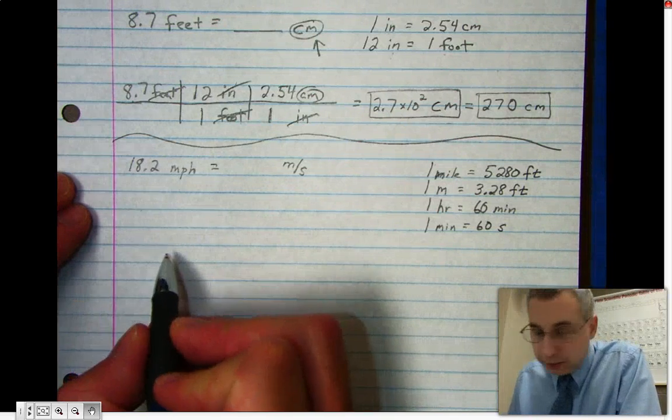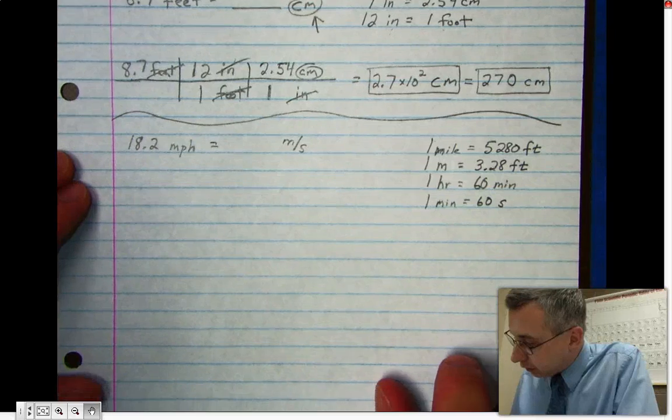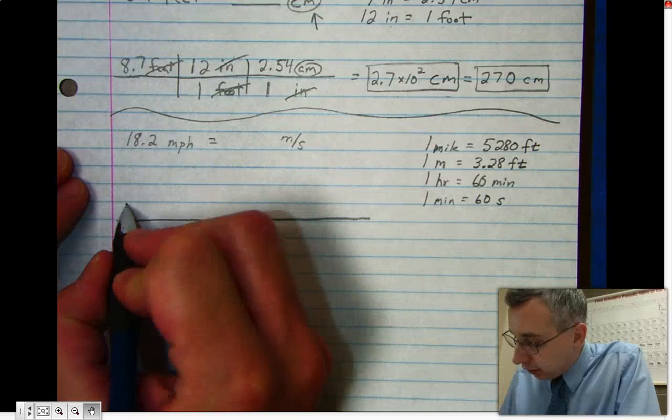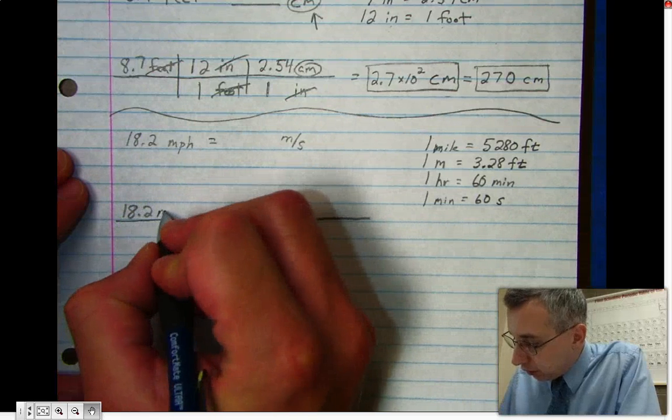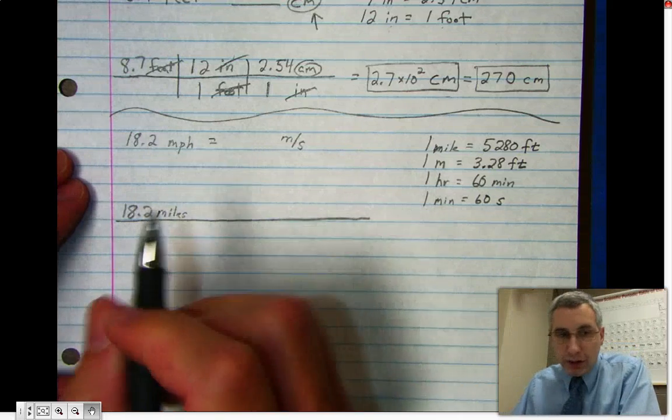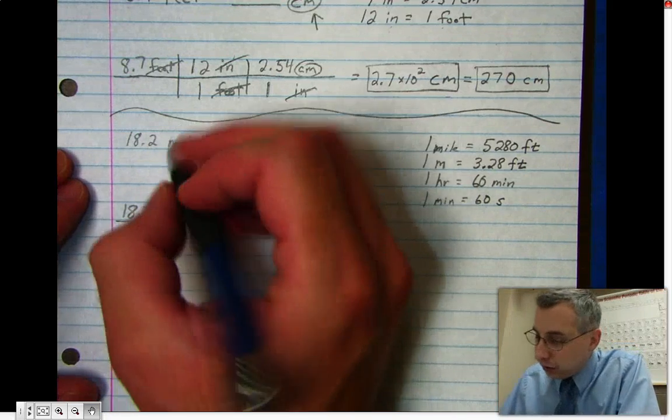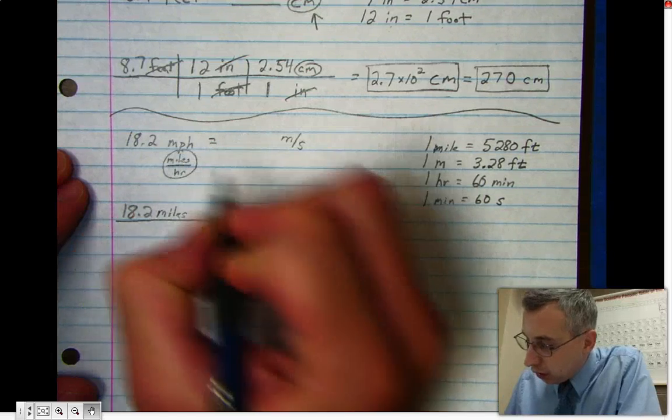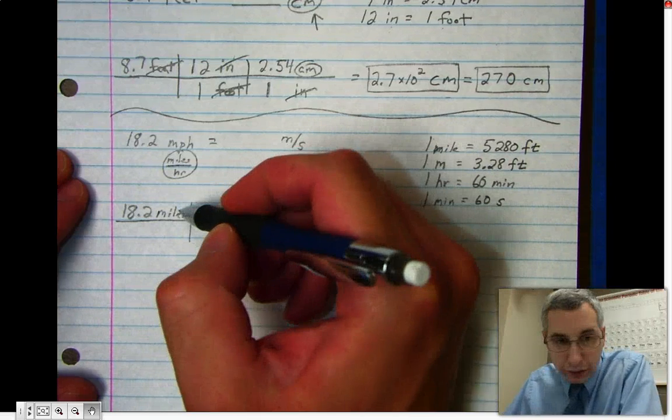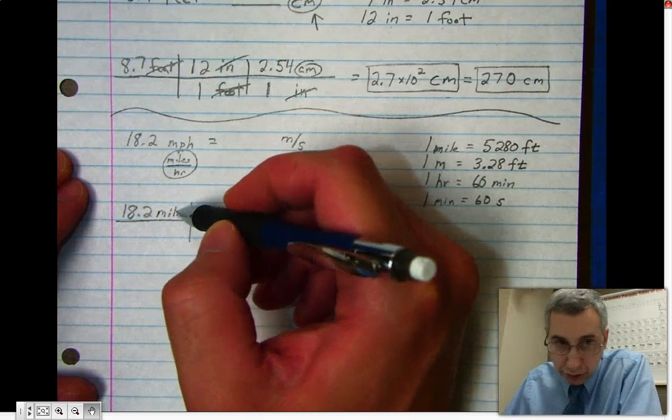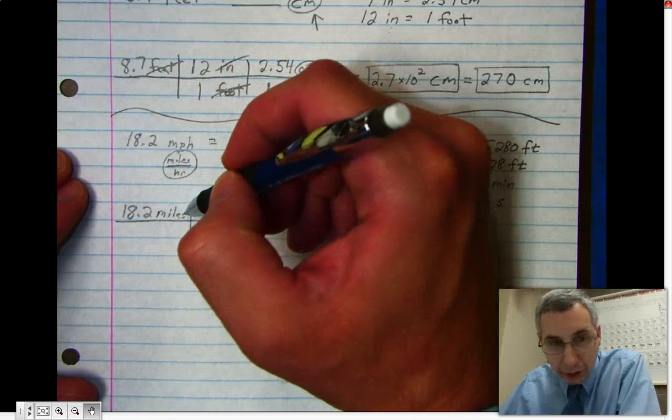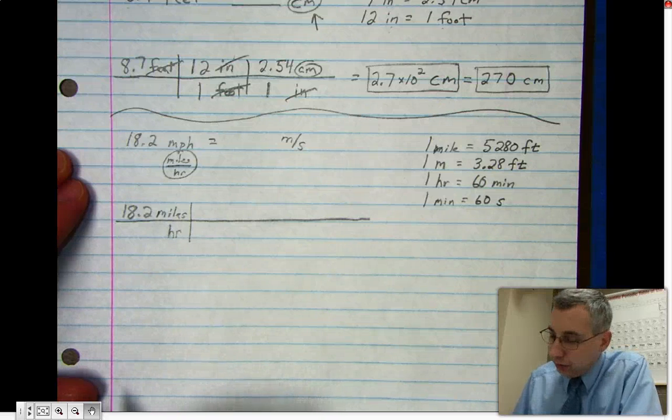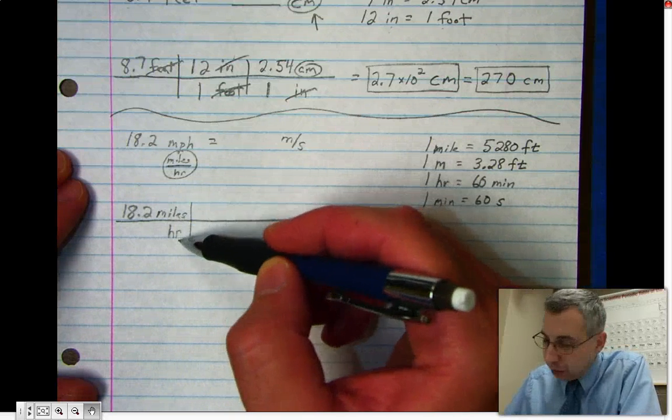Now here's where things get more complicated. It's going to be a long chart. I start out with 18.2, up here I put miles. Now remember it was miles per hour. That's like saying miles divided by hour, so when I make my T-chart, I put 18.2 miles up here and down below I write hr for hour. This is 18.2 miles per hour. You could think of it as being per one hour if you wanted to, but often the one isn't shown.